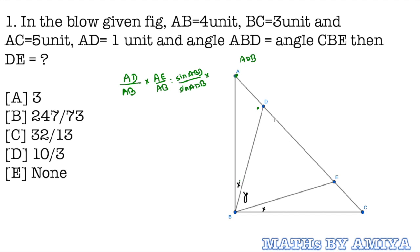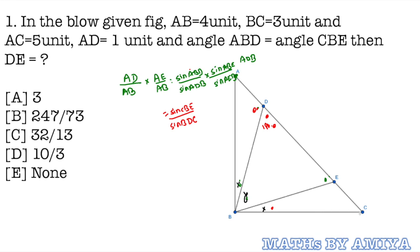For line AE, we are working on the angle X plus Y, which is angle ABE. So we write sine ABE. Now, since ABD equals CBE equals X, sine ABD equals sine CBE. Also, sine ADB equals sine BDC because if one angle is theta, the supplementary angle has the same sine. Similarly, angle ABE equals angle DBC equals X plus Y, and sine AEB equals sine BEC.